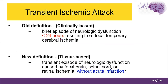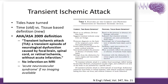Now we will talk about transient ischemic attack. The old definition was clinically based — a brief episode of neurological dysfunction lasting less than 24 hours resulting from focal temporary cerebral ischemia. But since 2009, the new definition is tissue-based: a transient episode of neurological dysfunction seen on MRI brain without clearly definite infarction — meaning we can find restricted diffusion on some MRI sequences without definite infarction, seen on diffusion ADC map without T2 FLAIR.